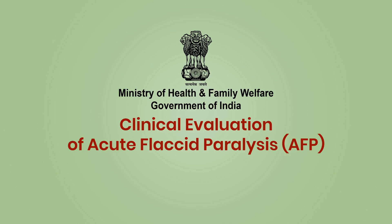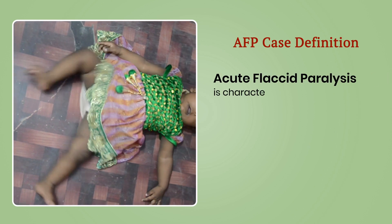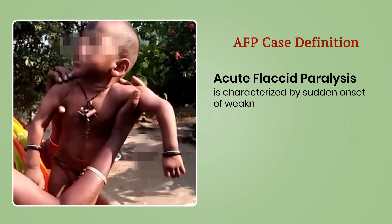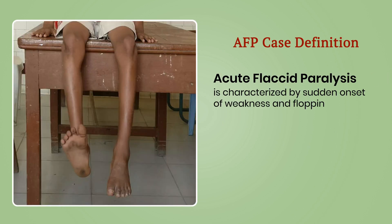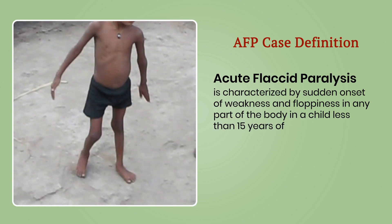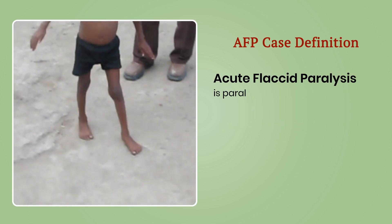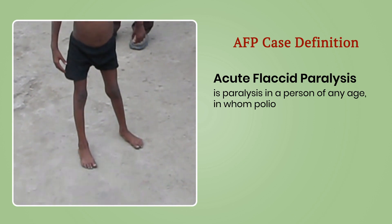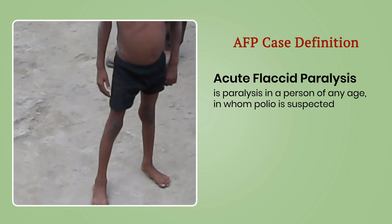In this video, we will learn about the clinical evaluation of an acute flaccid paralysis case. AFP is characterized by sudden onset of weakness and floppiness in any part of the body in a child less than 15 years of age, or paralysis in a person of any age in whom polio is suspected.